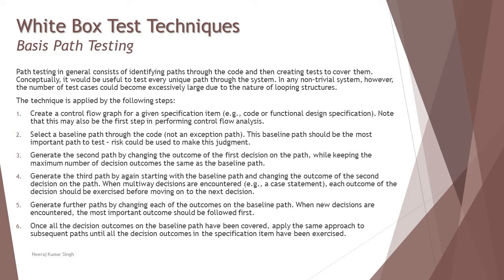So it's not recommended that you try everything possible, but if there is a decision change you can look forward to that. Here is the technique how exactly it is applied. First, convert a given pseudo code into a control flow graph, that is a flowchart for the given specification item. Note that this may also be first step in performing control flow analysis.